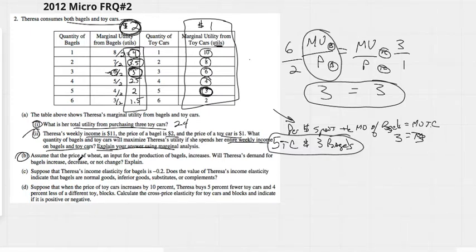All right. B, assume that the price of wheat, an input in the production of bagels, increases. Will Teresa's demand for bagels increase, decrease, or not change? Bit of a tricky question here.